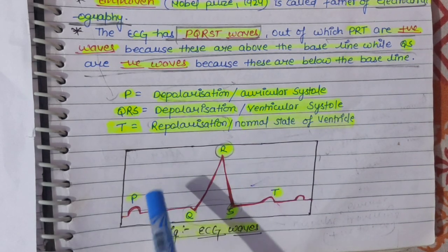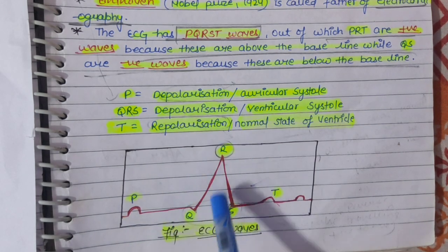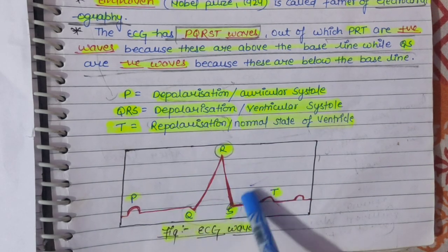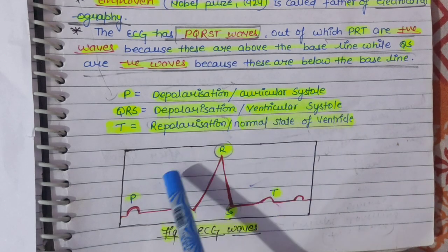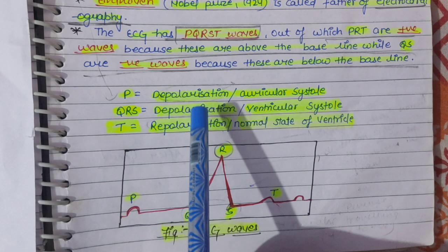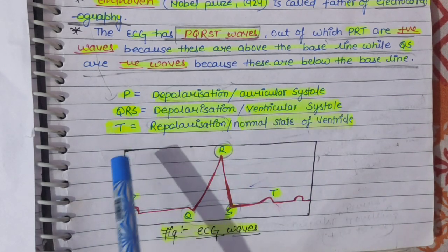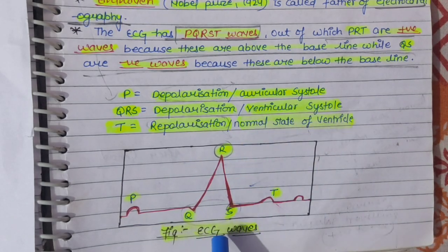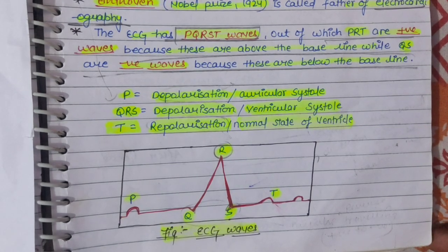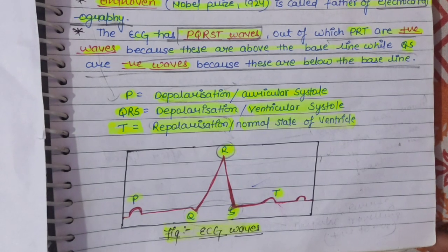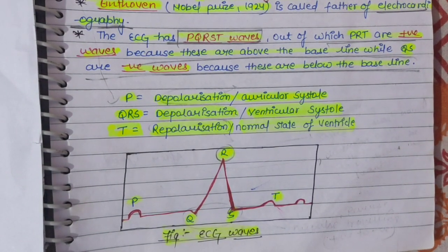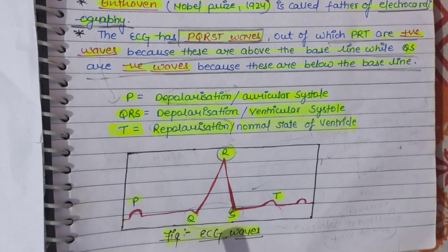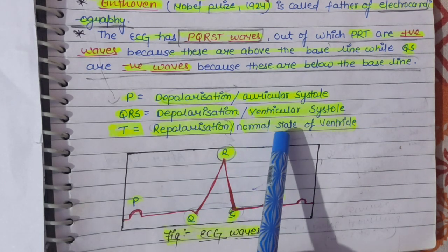So — P waves represents Auricular Systole, QRS waves represent Ventricular Systole, and T waves represent the Normal State of Ventricles. By this diagram we can represent the electrical activities of the heart and better understand the various kinds of waves generated during Auricular Systole as well as Ventricular Systole.